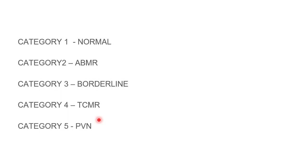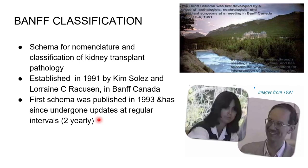This is the summary or the end slide of the Banff classification, but before that we will see how Banff has evolved and what Banff is. In practicals they always ask: what is Banff? It is a place in Canada. Regarding the Banff classification, it is a group which has made the nomenclature and classification of kidney transplant pathology.